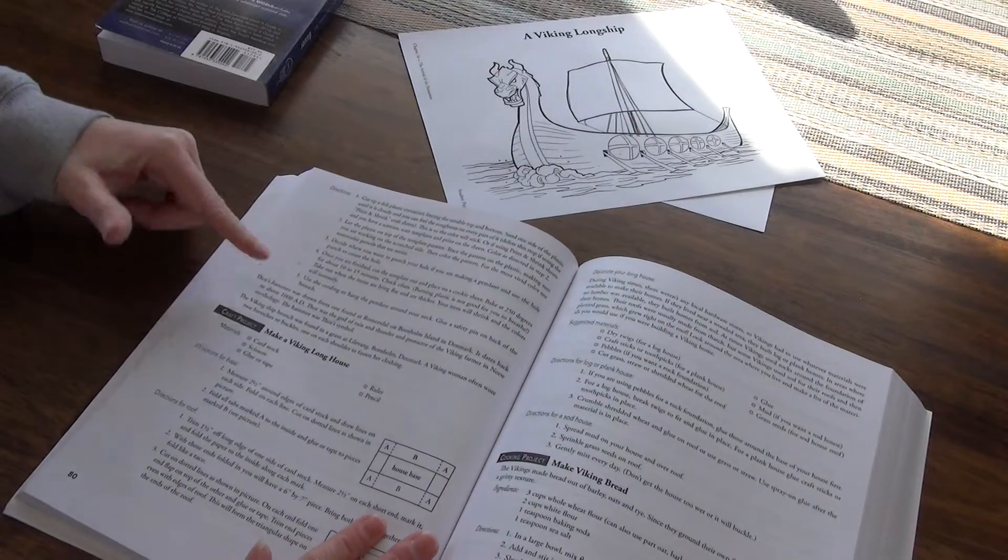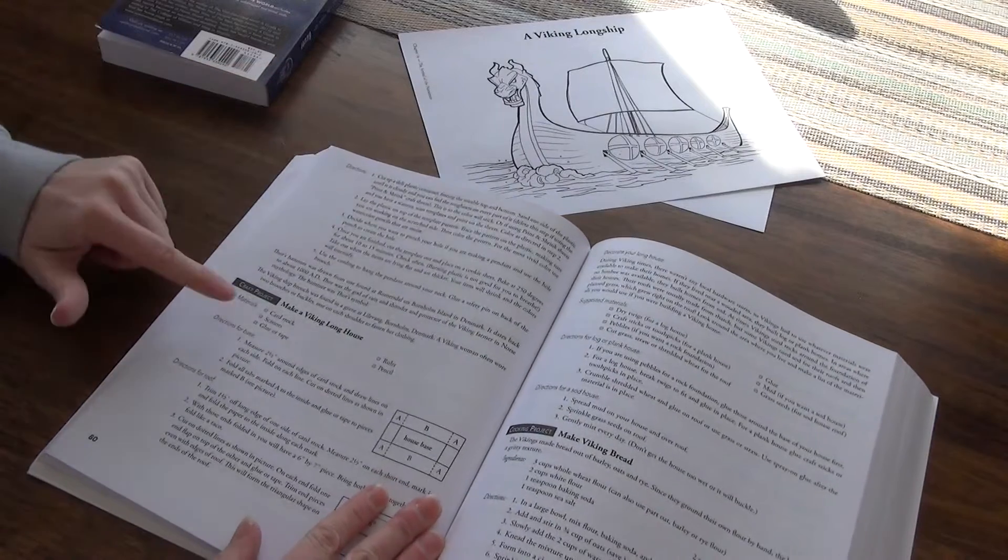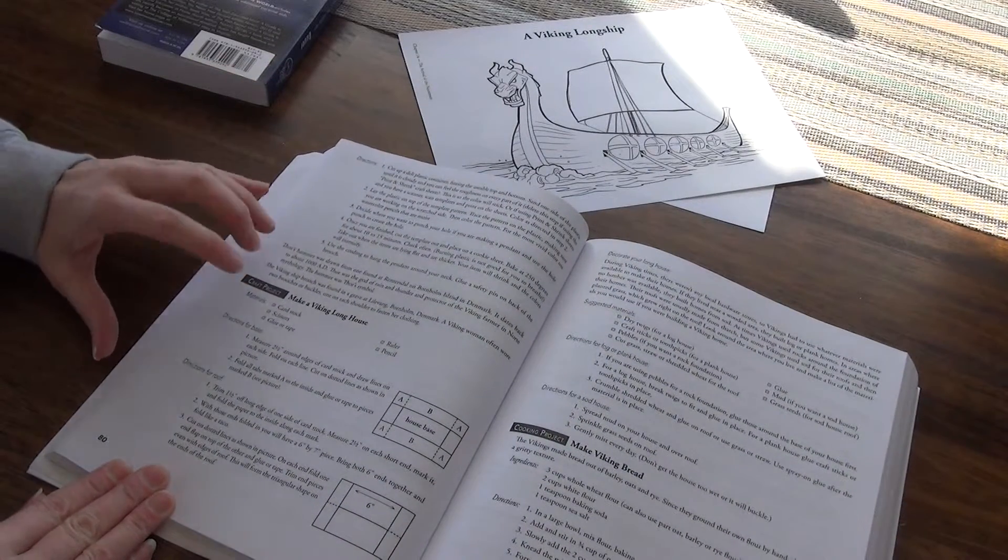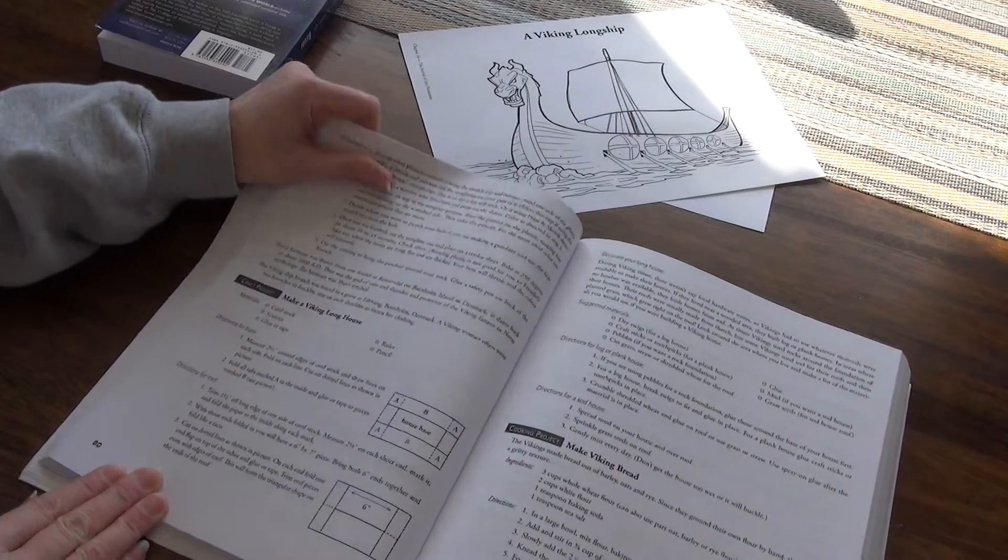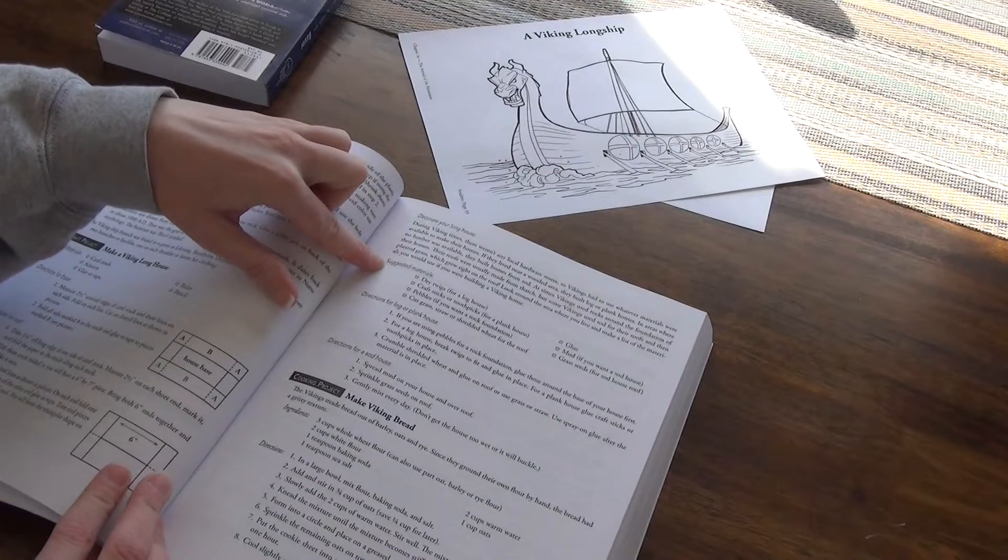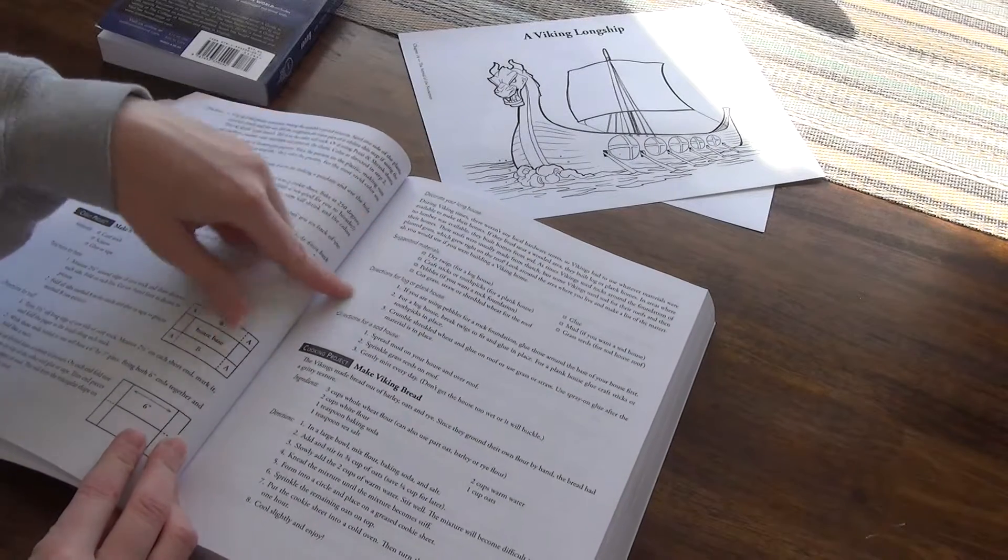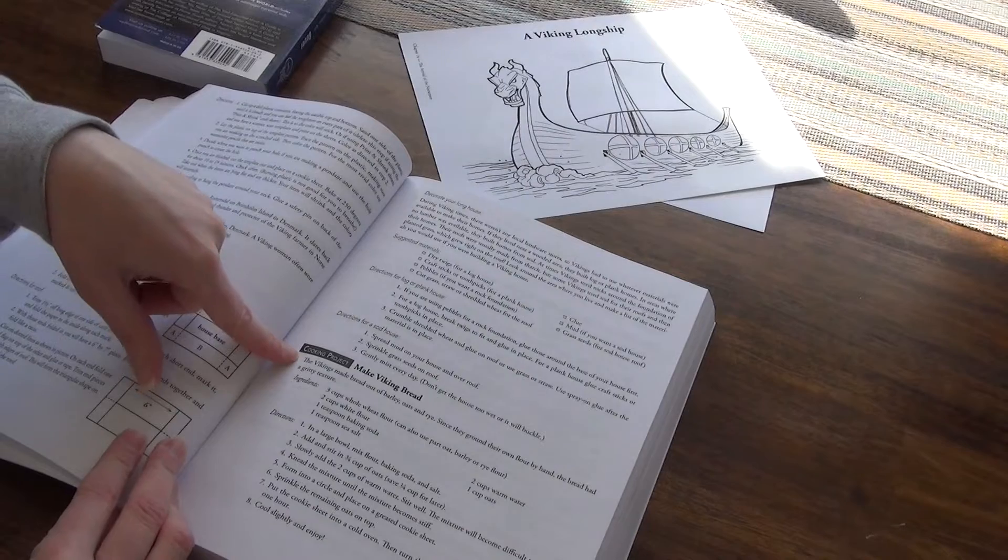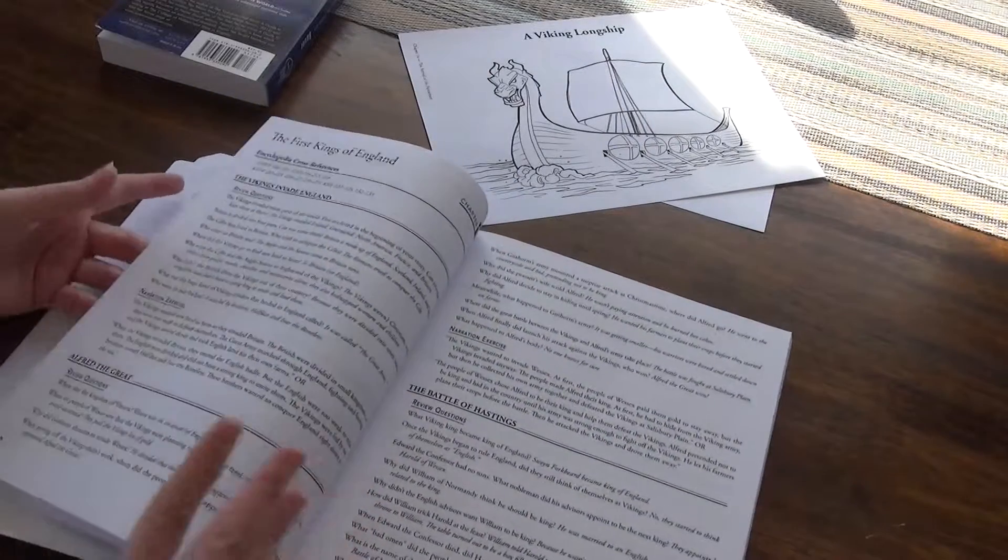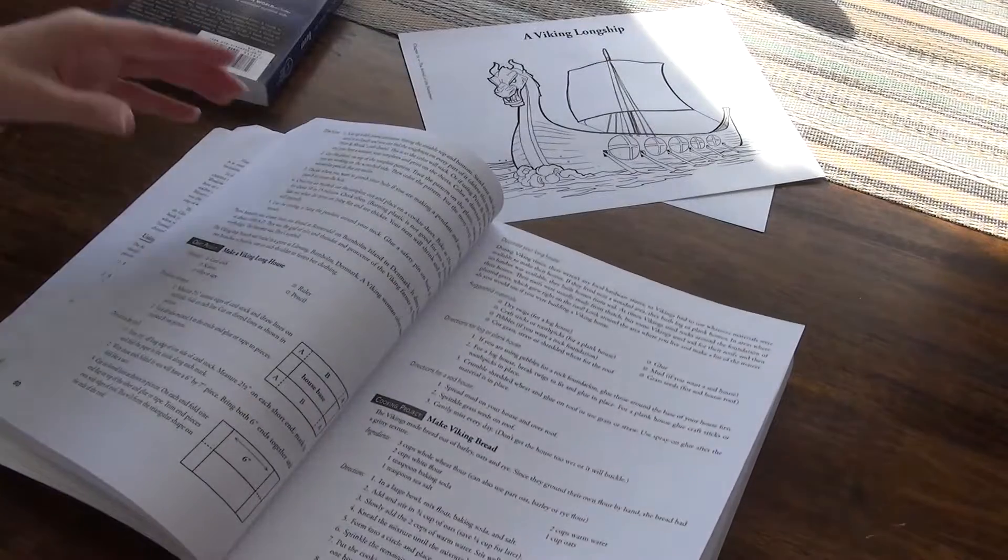Again, we have full directions on how to accomplish the project. Here is another craft project where they could make a Viking longhouse. Again, all sorts of directions, how to decorate it, different suggested materials that you're going to need, a cooking project. You could make a Viking bread. And then that is the end of chapter 14.